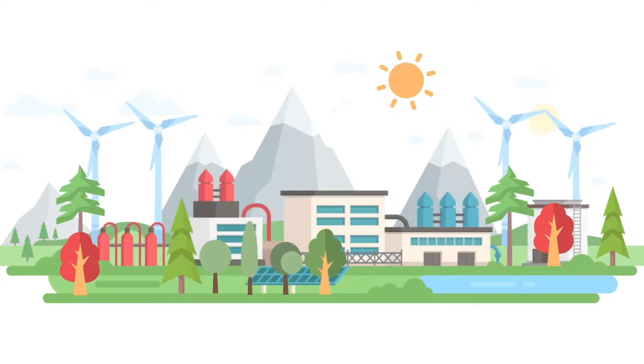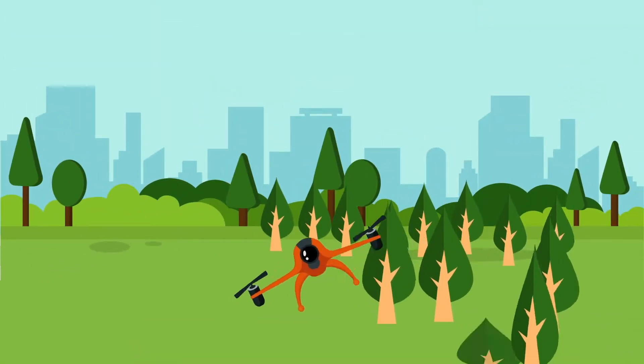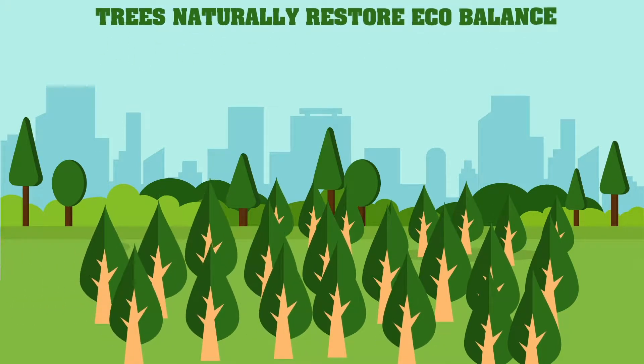Methane capture and carbon capture machines are able to make fuel and graphene for batteries, drones planting tree seedlings on a global scale. Trees naturally restore ecobalance, filter water and help our planet's ecosystem thrive for all life.